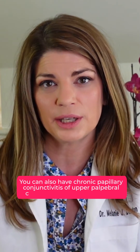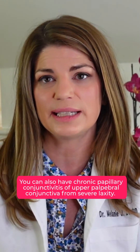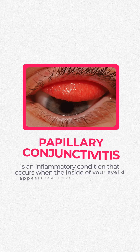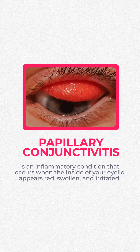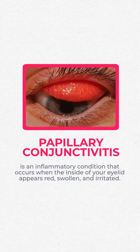You can also have a chronic papillary conjunctivitis. A papillary conjunctivitis is on the palpebral conjunctiva — the palpebral conjunctiva is underneath the lid, and we see that by flipping the eyelid.